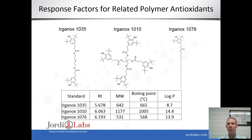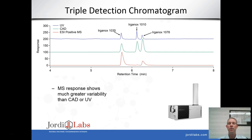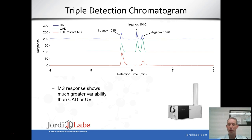Let's compare response factors for three different Ergonox compounds. Ergonox is a very important class of antioxidants, widely used in many polymer systems and frequently seen as extractables or leachables. These three compounds have a range of molecular weights from 531 to 1177, are all relatively non-volatile, and have relatively high hydrophobicity. Looking at the three chromatograms — UV in blue, CAD in green, and LC-MS in red — the UV detector gives a relatively consistent response with some drop-off for Ergonox 1076. The CAD gives the most similar response between all three compounds, whereas ESI positive mode detection gives very dissimilar responses, with Ergonox 1010 showing very poor response.